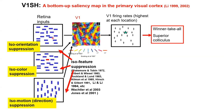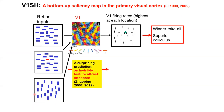This explains existing psychological data — these are postdictions. But can this hypothesis explain something not seen before? What else is in V1? We predict something surprising.